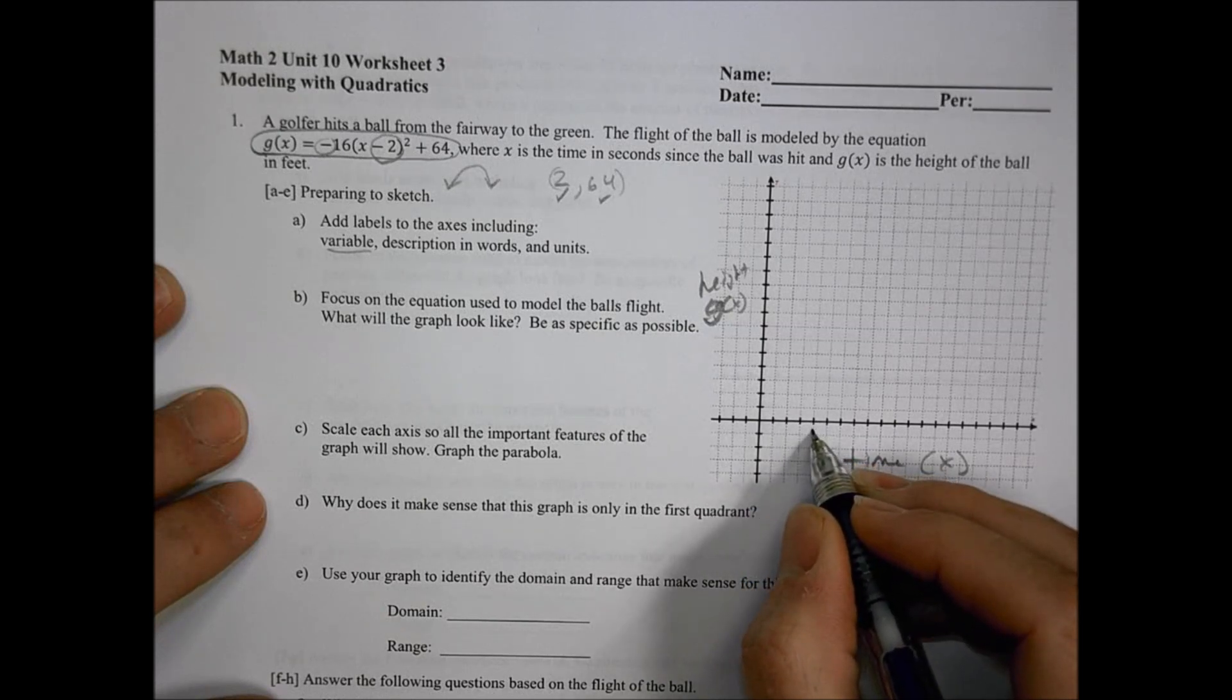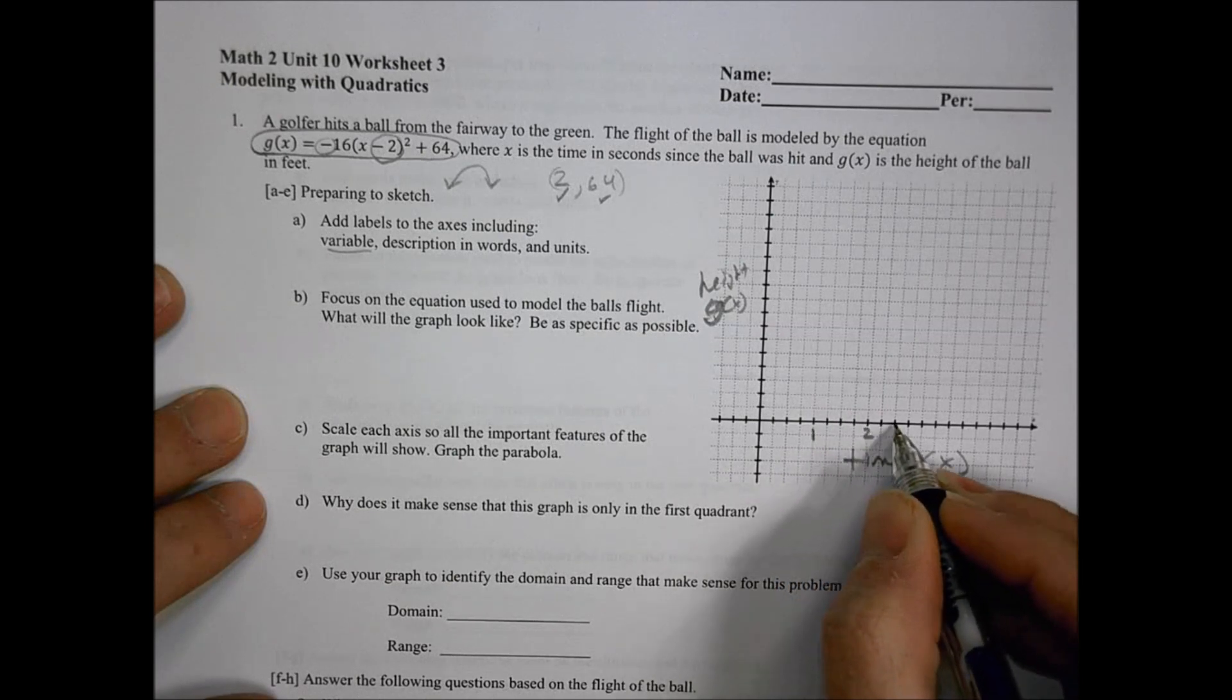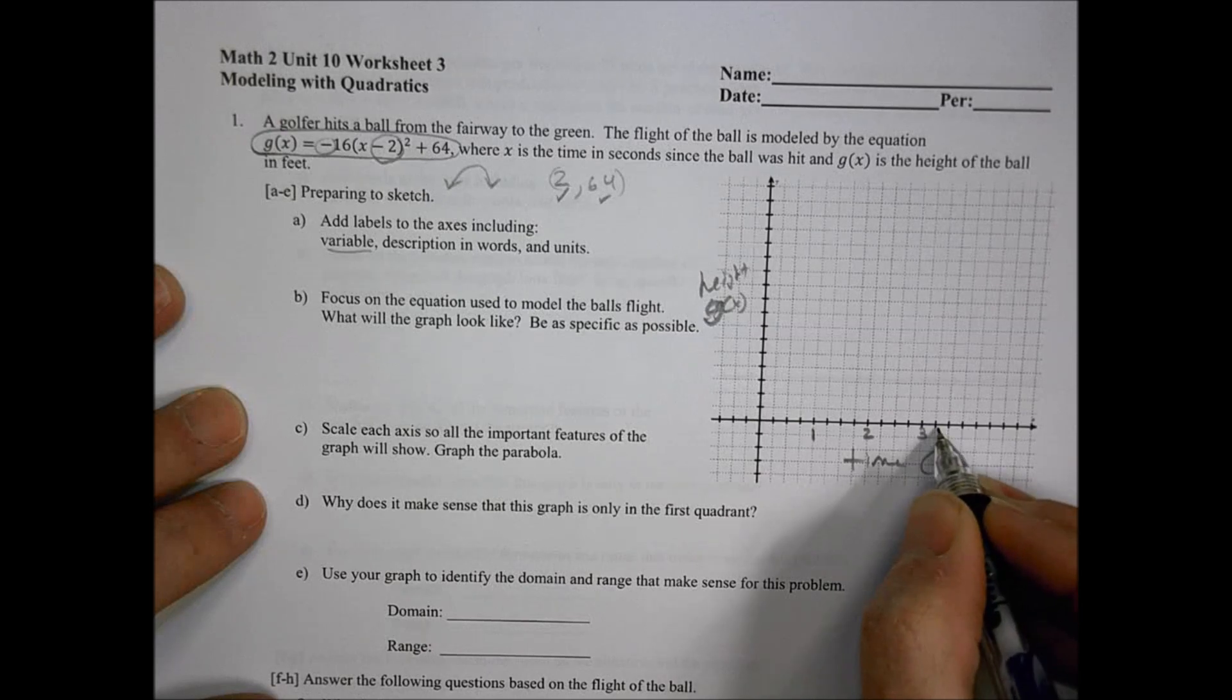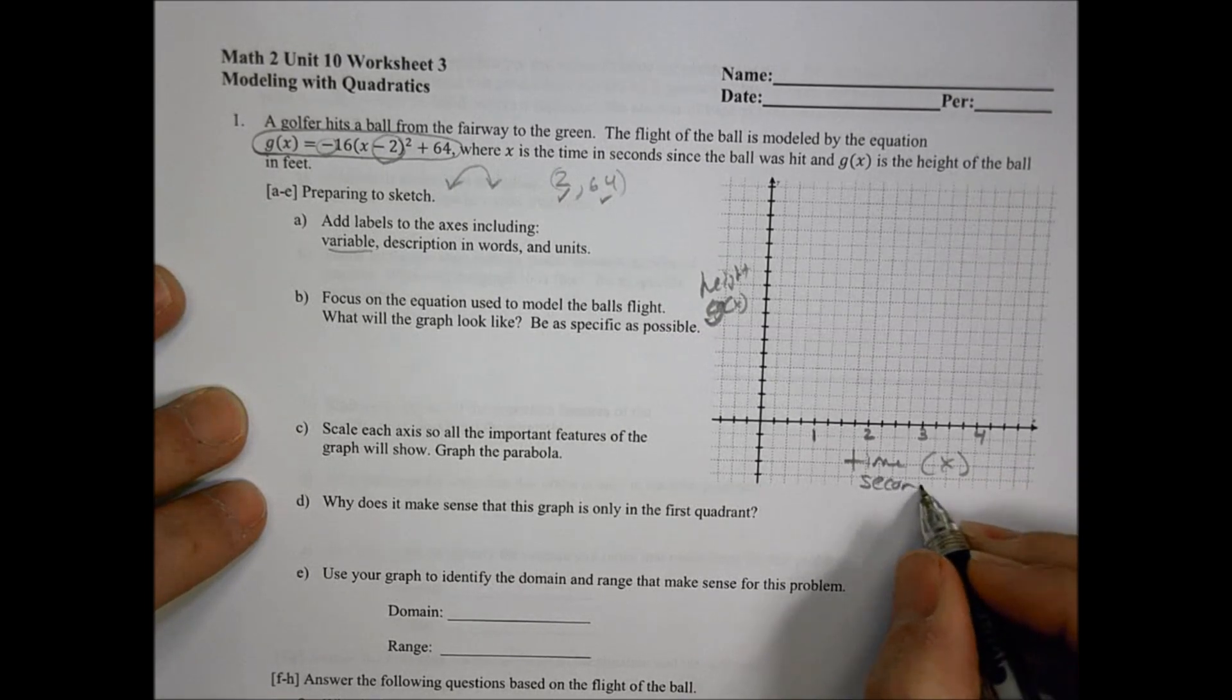If I was to sketch this out here, I could do 1, 2, it's pretty small. I'm going to break it up. Let's go every 4. So this becomes 1, 2, 3, 4, make that 1 second, then 2 seconds, 3 seconds, and 4 seconds right there.